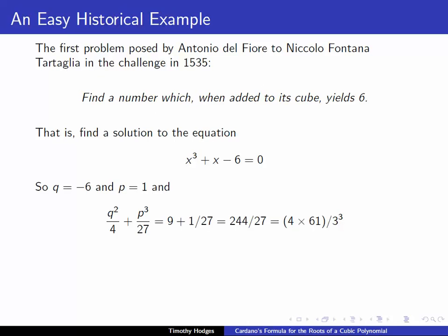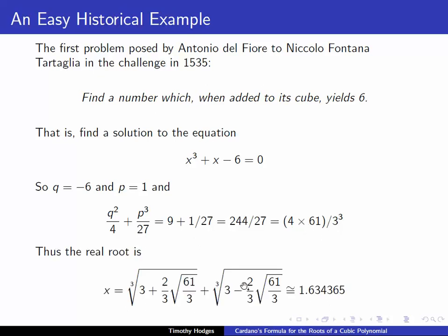Let's apply the formula. Notice that q squared over 4 plus p cubed over 27 is 4 times 61 over 3 cubed. If we plug all this into the formula, eventually we get the following result. That's the easy case when the square root is a real number and we get a single real solution.